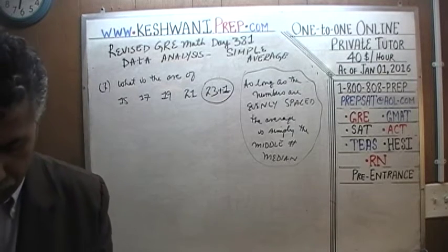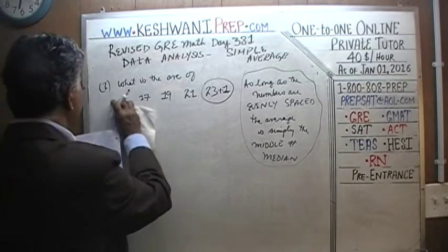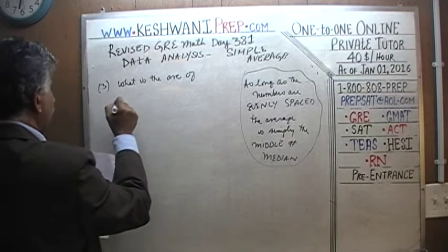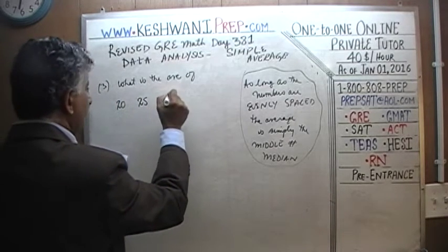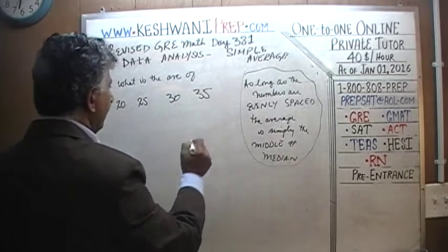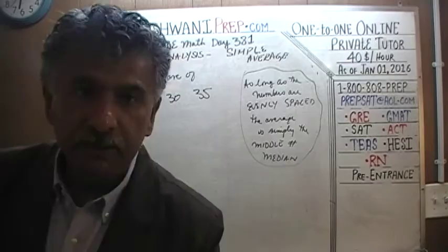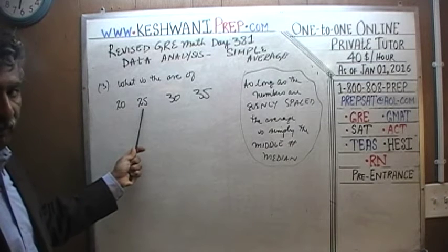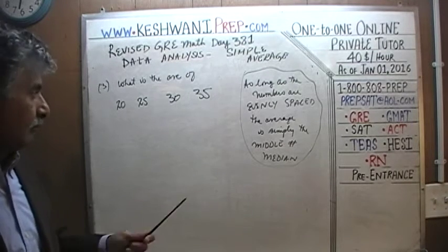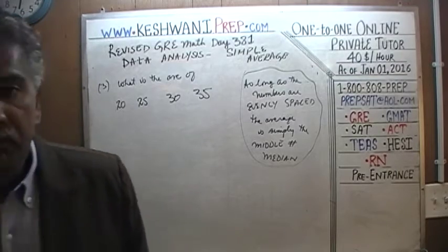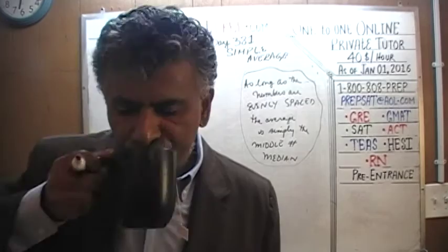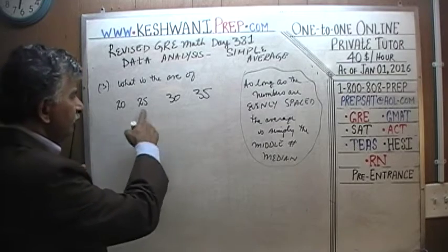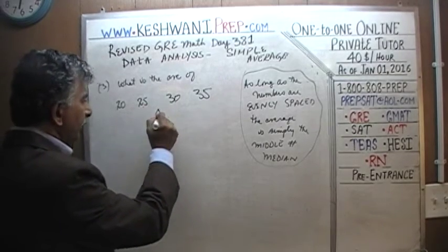Number 3 — do it yourself. What's the average of 20, 25, 30, and 35? As you can see, clearly they are evenly spaced, going up by the exact same increment of 5. The average in this case is just the median. Except here we have an even count of numbers, so the median is the average of the two middle numbers. The number that falls exactly between 25 and 30 is 27 and a half.